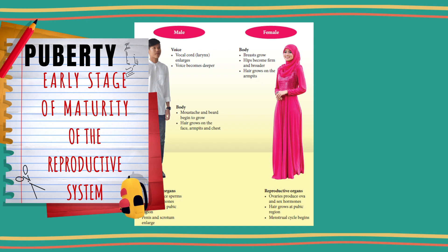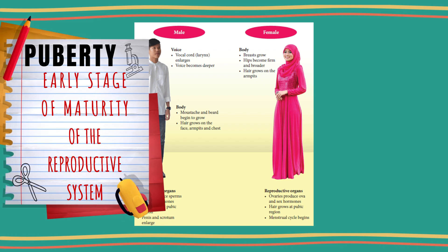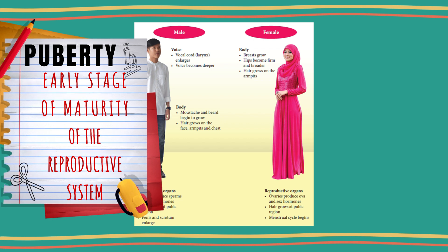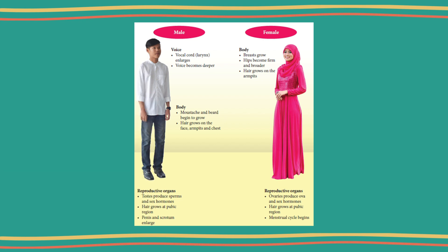During puberty, the mature reproductive system in adolescents produces reproductive cells and starts to stimulate the production of certain sex hormones. Sex hormones cause the body to change from that of a child to an adult.